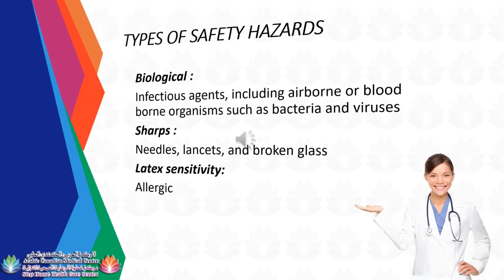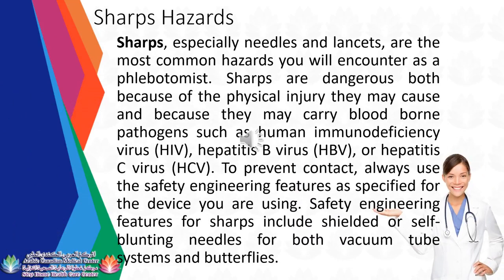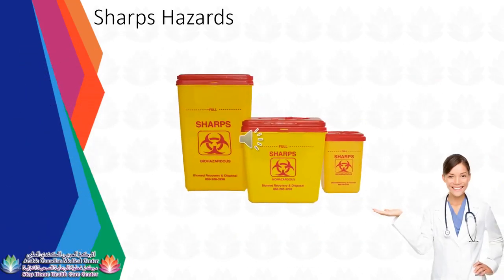Blood-borne pathogens include human immunodeficiency virus (HIV), hepatitis B virus (HBV), and hepatitis C virus (HCV). To prevent contact, always use the safety engineering features as specified for the device you are using. Safety engineering features for sharps include shielded or self-blunting needles for both vacuum tube systems and butterflies. A biohazard sharps container is a yellow-red puncture-resistant container made of heavy-duty plastic, able to close with a tight-fitting lid without sharps being able to come out, and properly labeled to warn of hazardous waste inside.